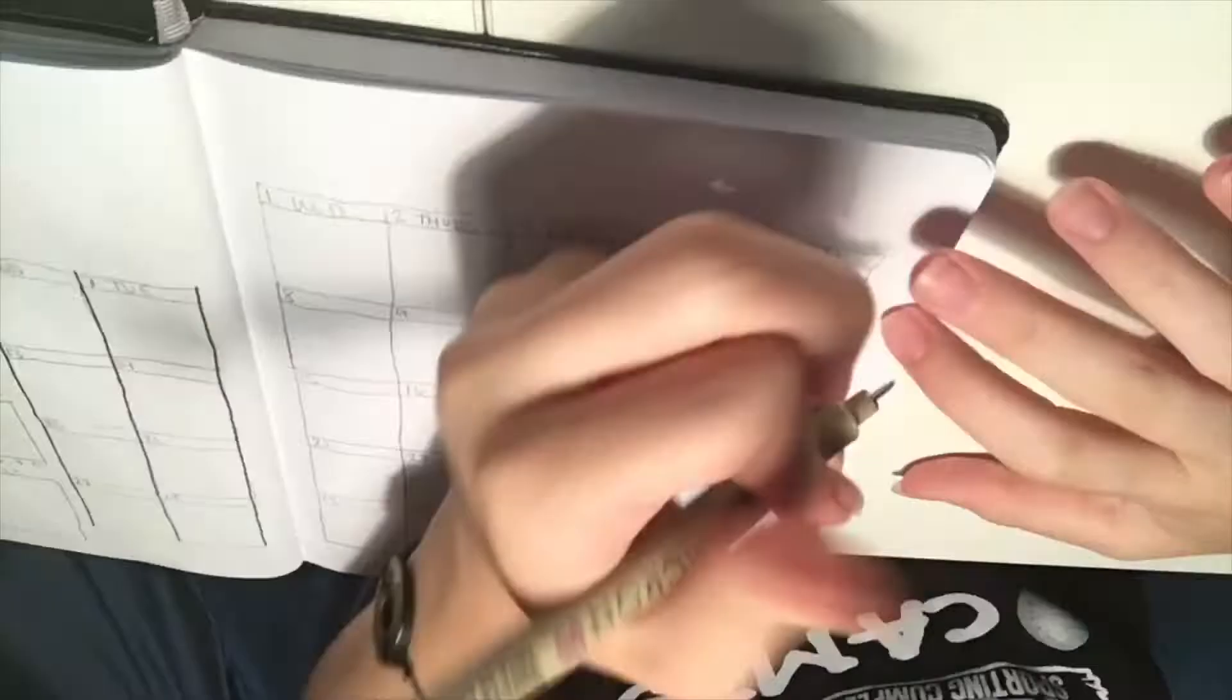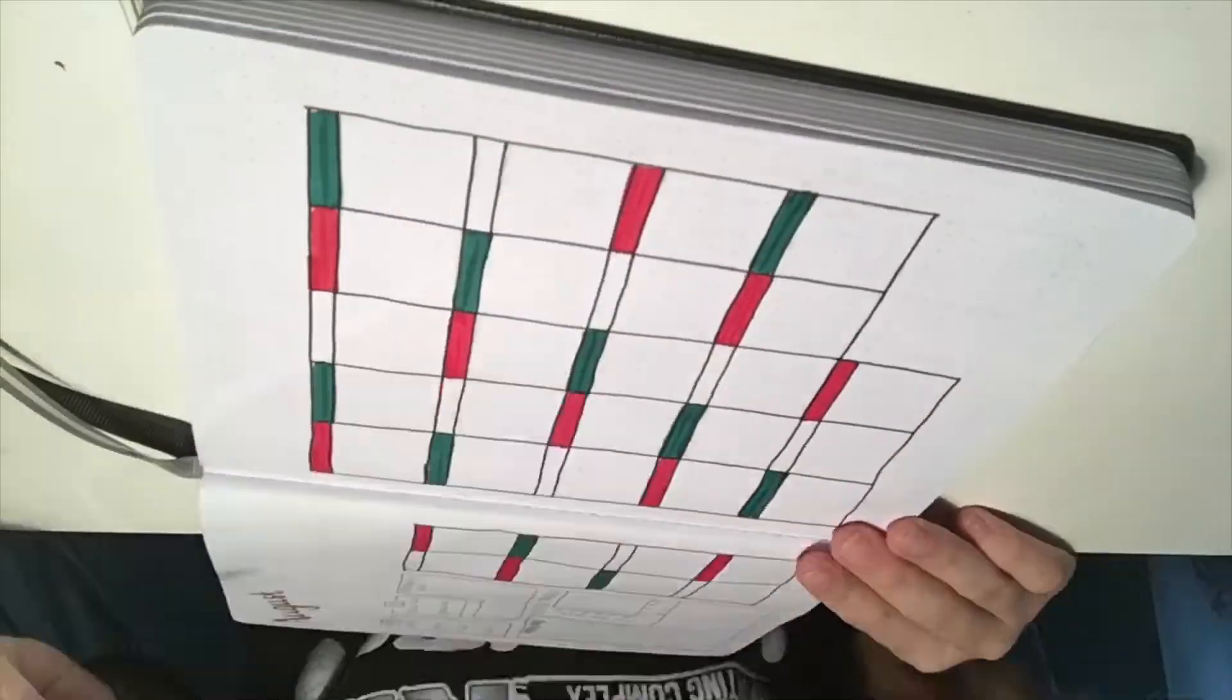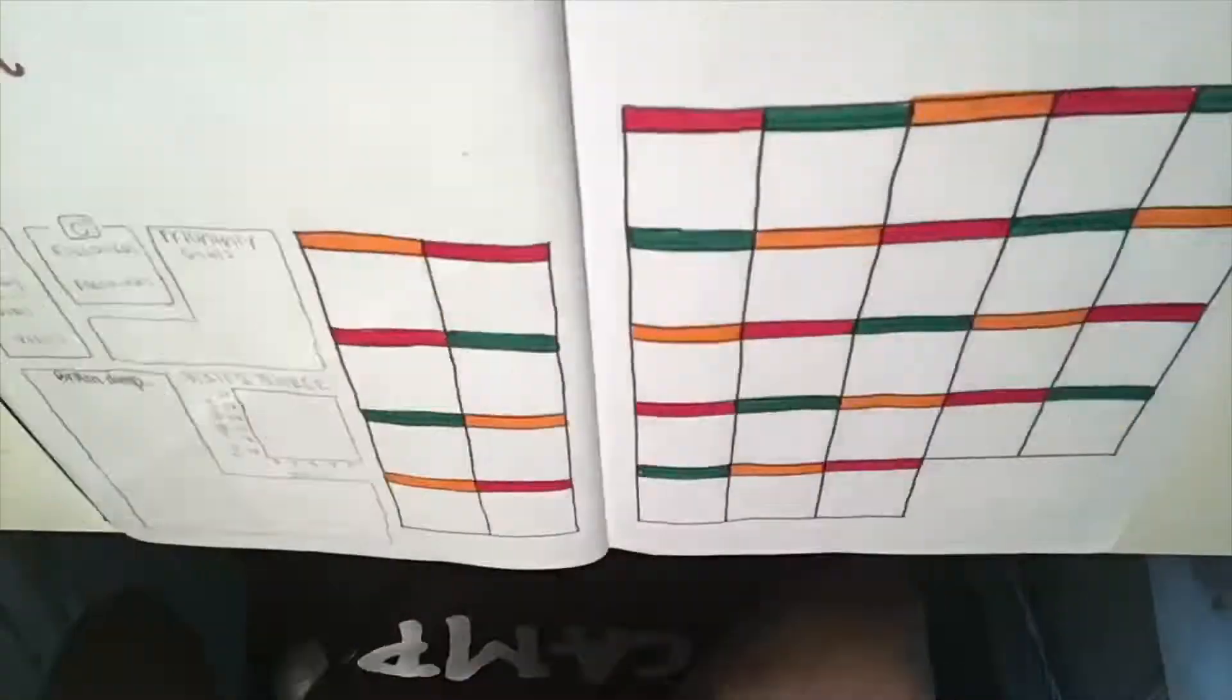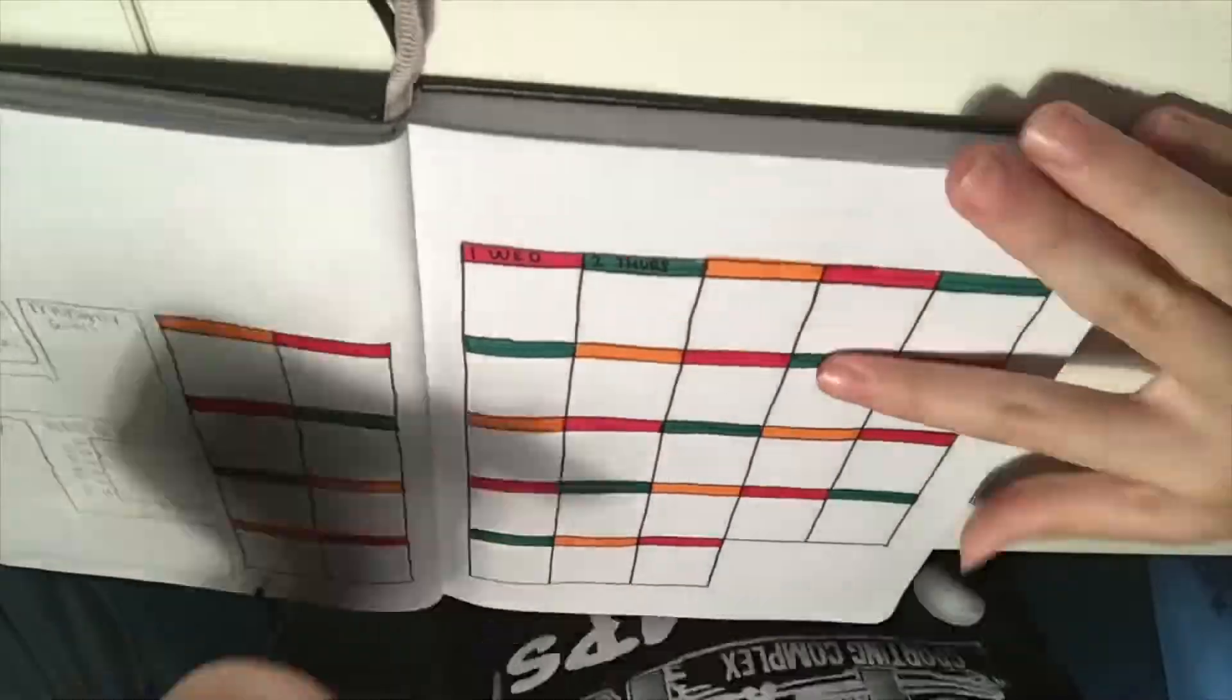For this, I wrote August at the top and drew in my month with a fineliner. Then, I went in and colored the tops of each box with a red, green, and orange Tombo.